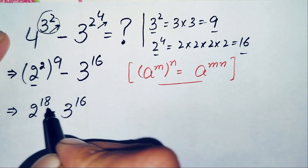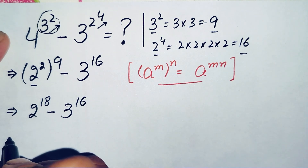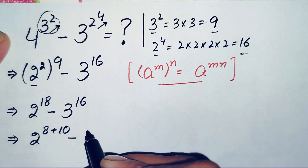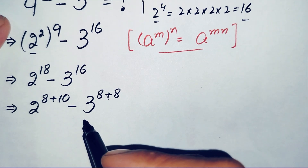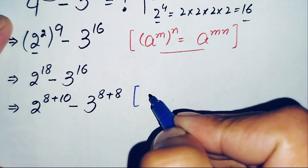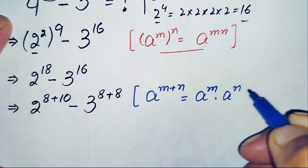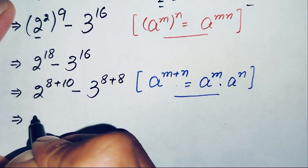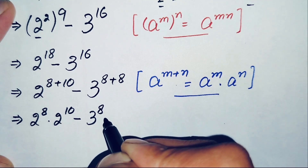Now we will split the exponents: 18 as the sum of 8 plus 10, and 16 as the sum of 8 plus 8. Using the exponential identity a raised to power m plus n equals a raised to power m times a raised to power n, this equation becomes 2 raised to power 8 times 2 raised to power 10, minus 3 raised to power 8 times 3 raised to power 8.